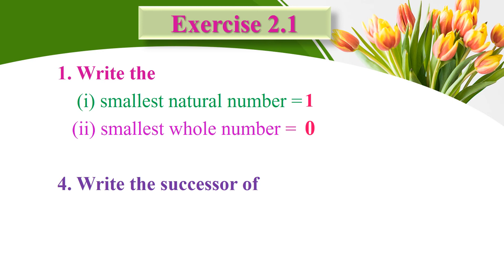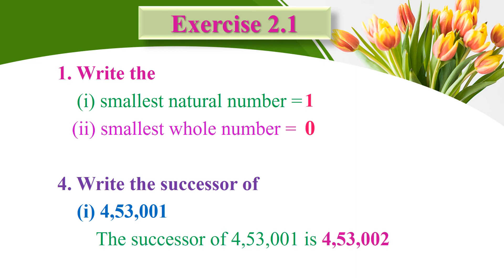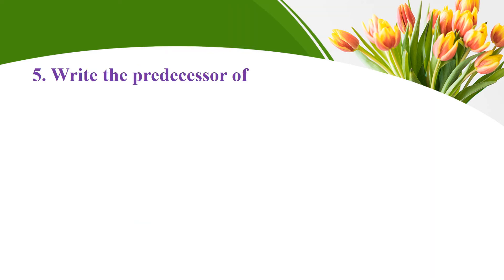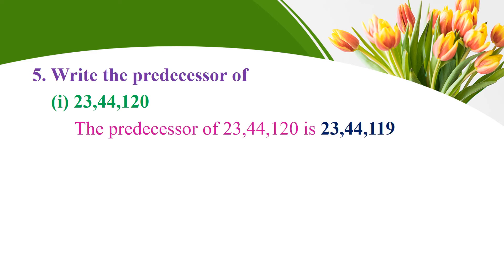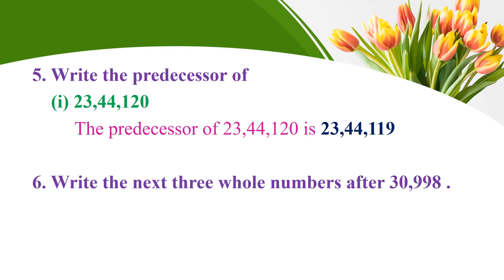Write the successor of 4,53,001 — successor means add one, so the successor of 4,53,001 is 4,53,002. Write the predecessor of 23,004,001 — predecessor means subtract one from that number, so the predecessor of 23,004,001 is 23,004,000.